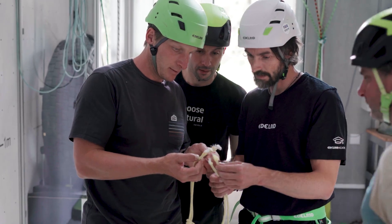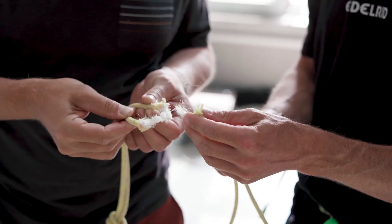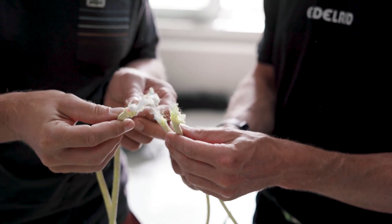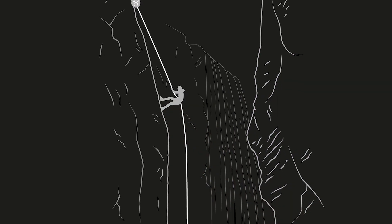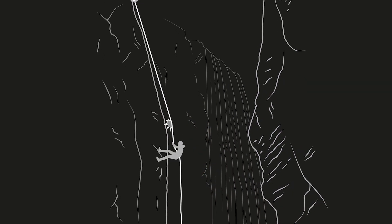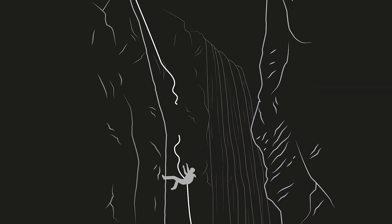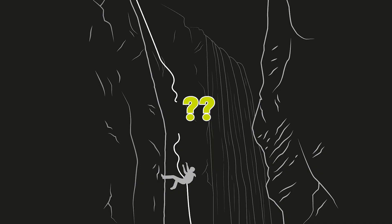Alex and Thomas, two canyoning guides from the Allgäu, visited us because Alex had an accident due to a rope breakage while canyoning. Together we wanted to find out what caused it and did a few tests. I am Florian Hellberg from the Edelried knowledge base and I want to tell you about these tests and our interpretation of what caused the rope break.